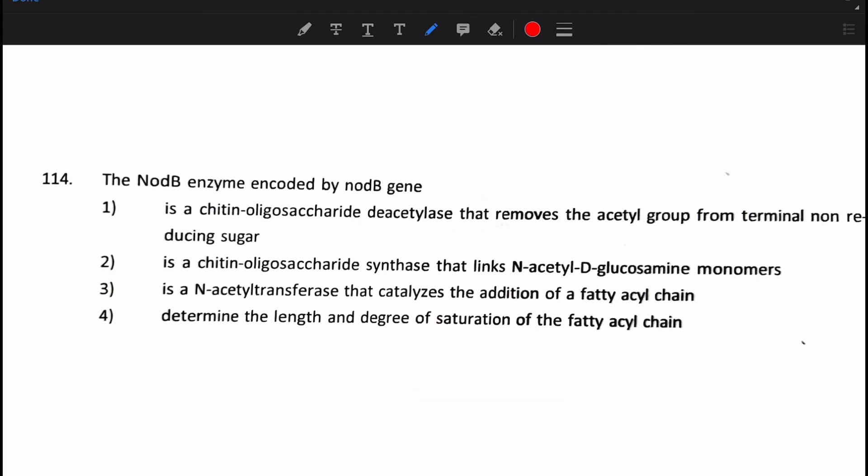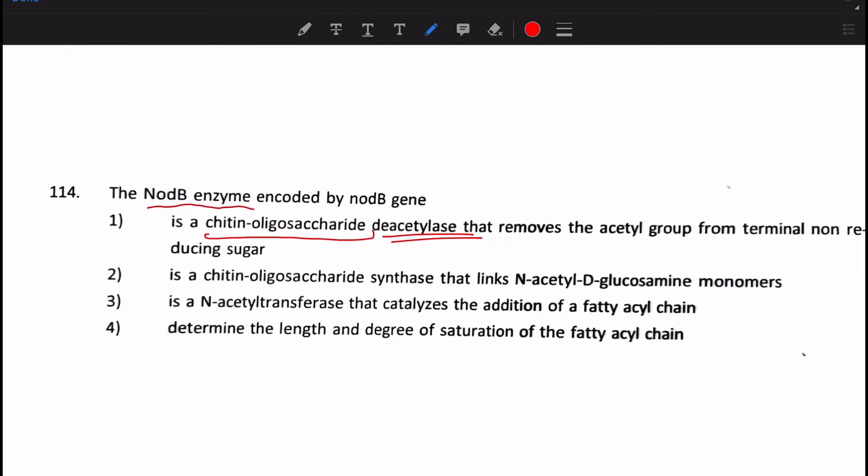So, the next question, the NODB enzyme, the NOD factors, which we find in the chapter nitrogen metabolism, right, is encoded by NODB gene. Is what? It's a difficulty level question, and our answer is that it is a chitin oligosaccharide deacetylase that removes the acetyl group from the terminal non-reducing sugar. Our answer will be number 1. Here we have ended 2014 questions only, but we have answered 22 questions.